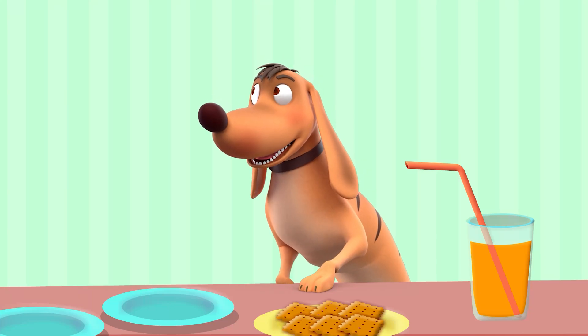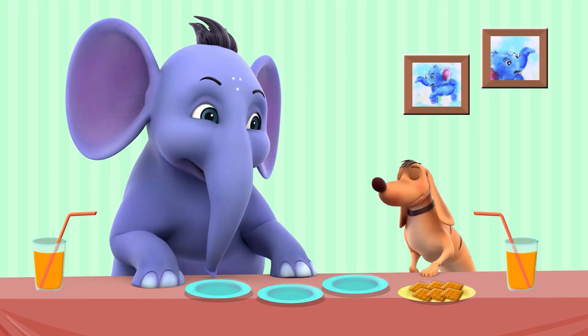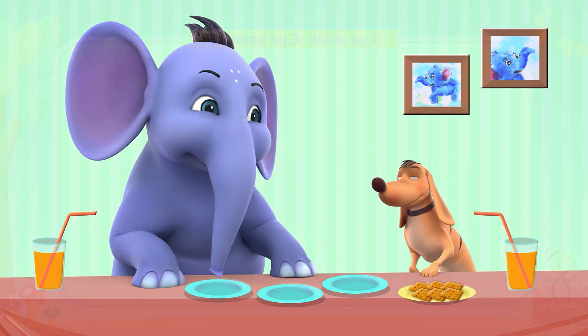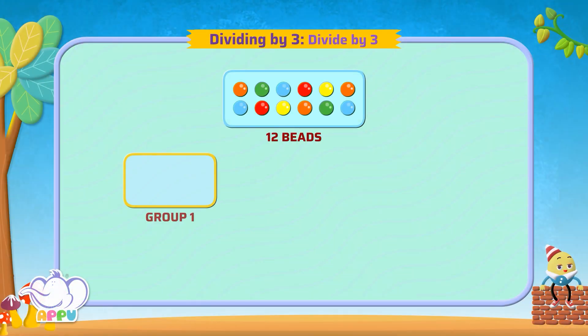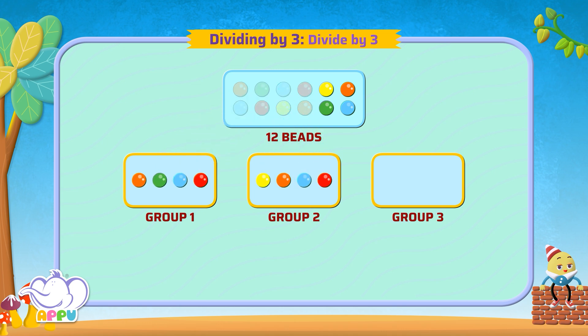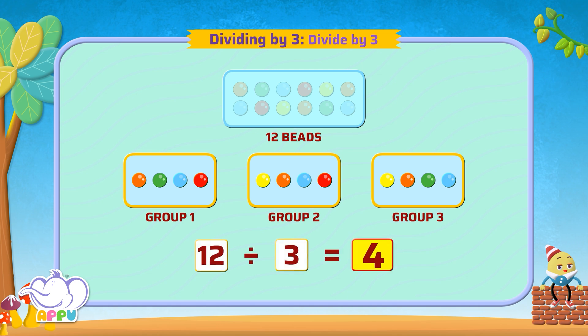Can we do some practice for dividing by three? Yes! Let's divide some beads. Let's divide 12 beads in three groups. How many beads are there in each group? When we group 12 beads in three groups, we get 4 beads in each group. So, we write 12 divided by 3 equals 4 beads in each group.